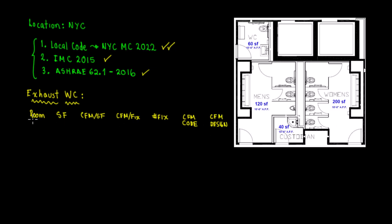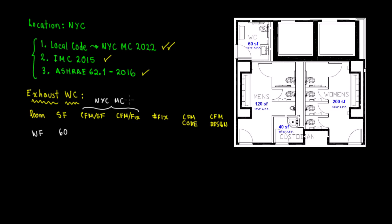The room is called WC. The square footage is 60 square feet. For the CFM per square feet and CFM per fixture columns, those values come from the code. We have three options: New York City Mechanical Code 2022, IMC 2015, or ASHRAE 62.1-2016. In this case we're going to use the NYC New York City Mechanical Code 2022. We need to go to the code tables to get this information.